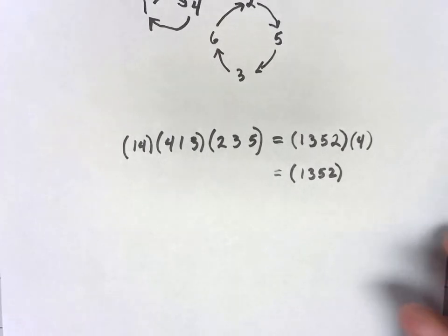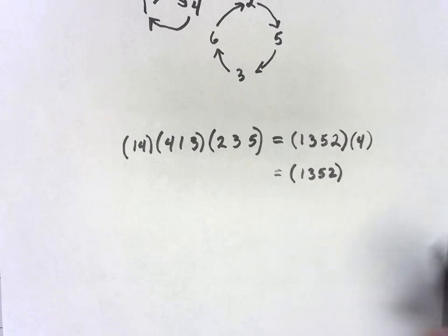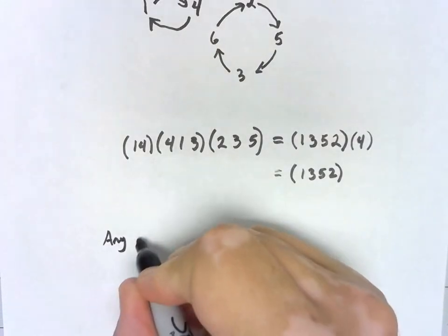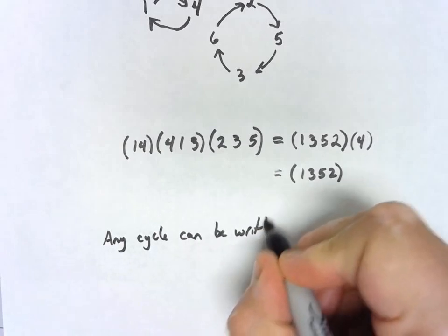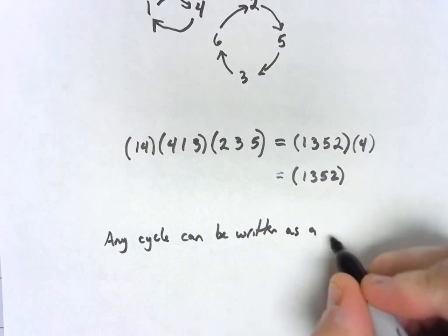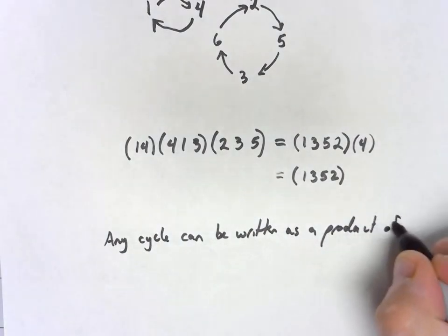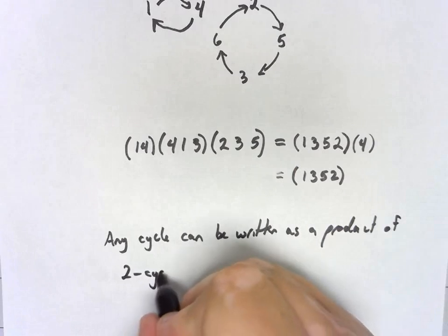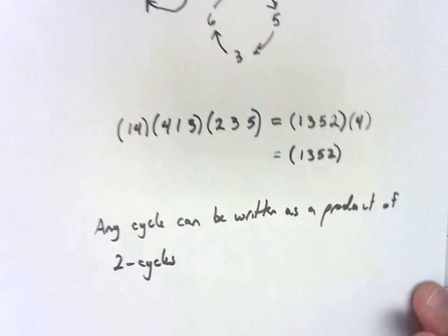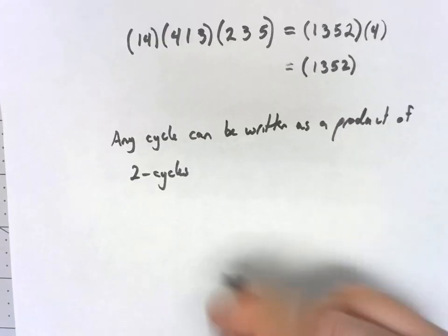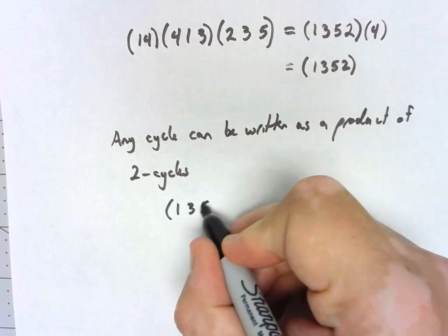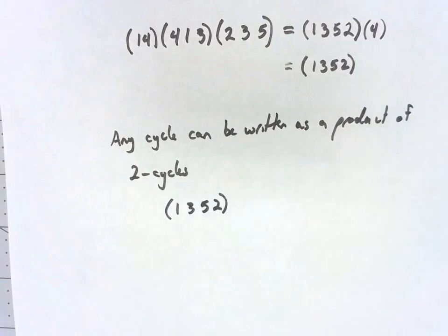One important thing about this cycle notation, any cycle can be written as a product of two cycles. Let's take a look at a simple little example. In fact, why don't we just build off this one. Let's say I have the (1,3,5,2).